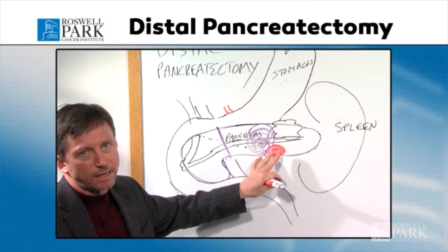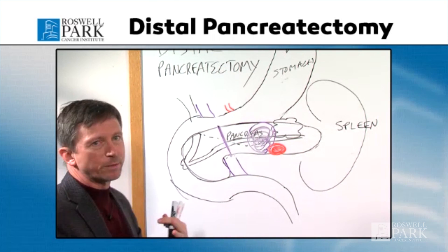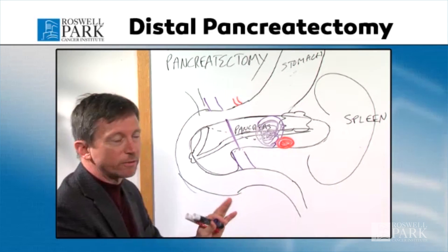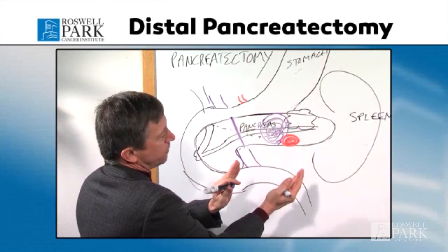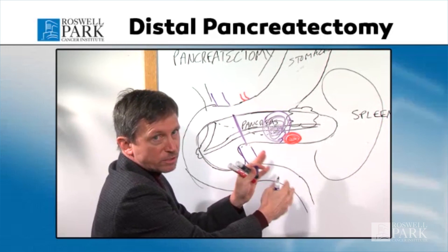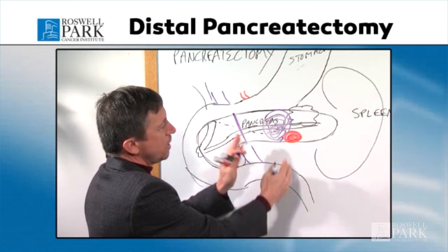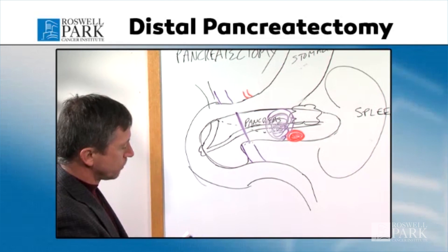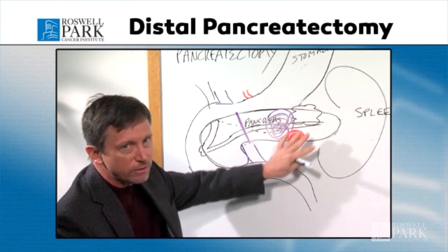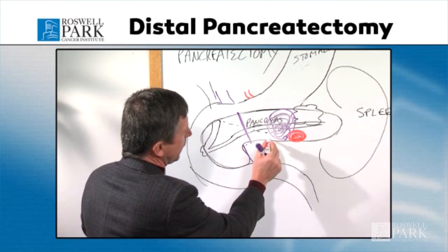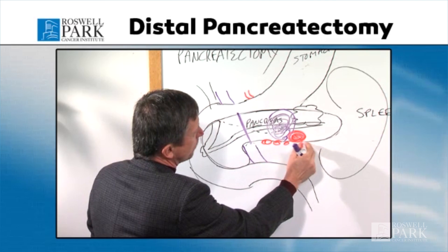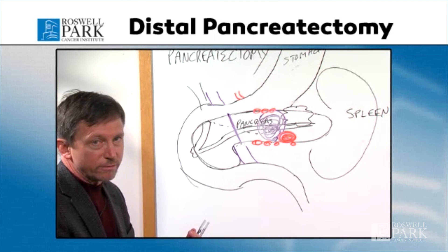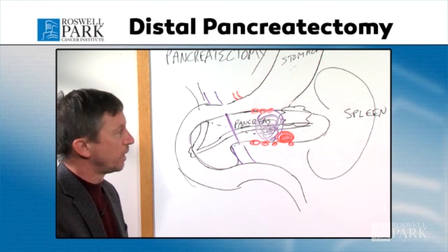A lot of that is determined by the type of tumor you have. If it's a more benign or precancerous tumor, we may do what's called a splenic-preserving, where we actually just remove the tail of the pancreas. However, if it's a cancerous or suspected cancerous tumor, we will remove the spleen along with the pancreas. The first reason is that there are a lot of lymph nodes around the tail of the pancreas, and if we remove the spleen as well, we'll remove more lymph nodes to be tested by the pathologist.